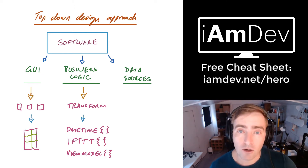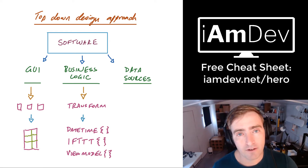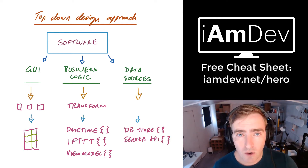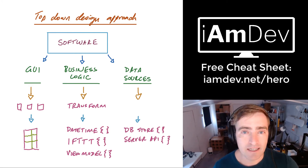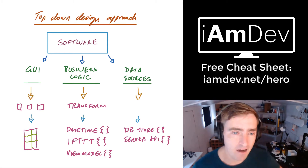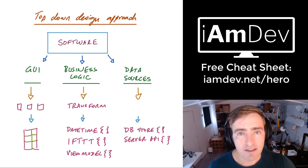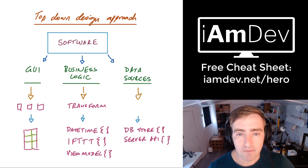You might have something like a view model which feeds the graphical user interface with the data to display. And then moving on to data sources, you'd have something like a database store — RoomDB in Android, SQLite in iOS and Windows, or what's called Core Data in iOS, but I wouldn't touch that, I'd stick with SQLite — top tip. You'd also have things like servers that you are making calls to that provide data back to the app.